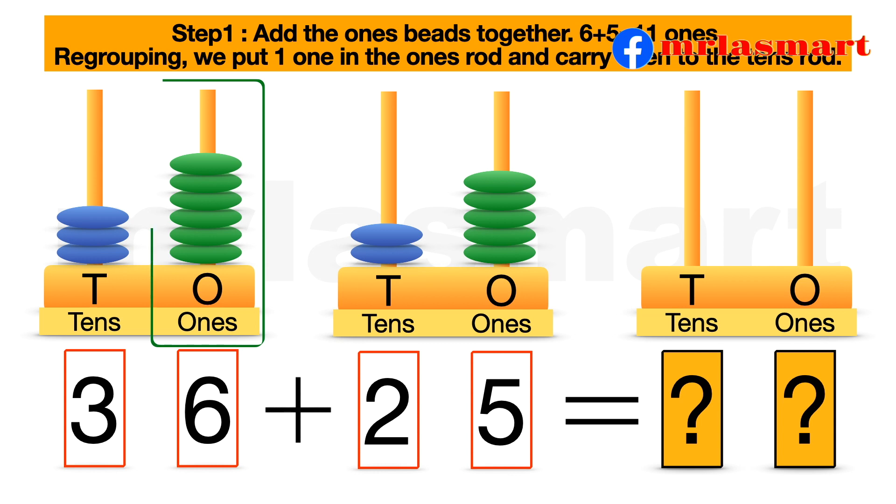Step one. Add the one beads together, six plus five equals eleven ones. Regrouping. We put one one in the one's rod and carry one ten to the ten's rod.